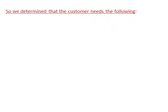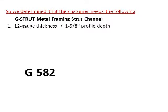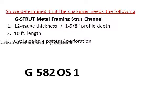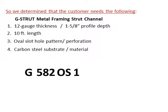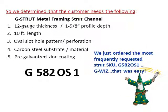So we determined that the customer needs the following: G-Strut metal framing strut channel, 12-gauge thickness, 1-and-5/8-inch profile depth, 10-foot length, oval slot hole pattern, carbon steel substrate material, and pre-galvanized zinc coating. So we just ordered the most frequently requested strut SKU: G582-OS1. Gee whiz — that was easy!